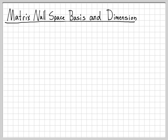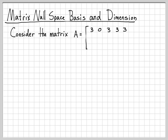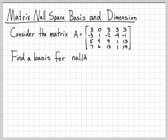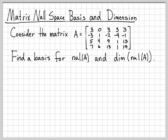In this problem, we're going to take a look at the null space of a matrix. We're going to find a basis for the null space and also find the dimension of the null space. The matrix we're going to work with is matrix A, which has four rows and five columns. The goal is to find a basis for the null space of A — that's often the notation you'll see — and then find the dimension of the null space, i.e., how big is this subspace.